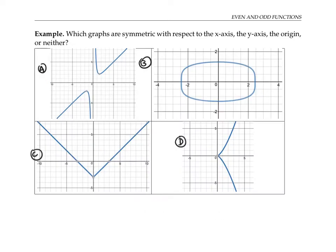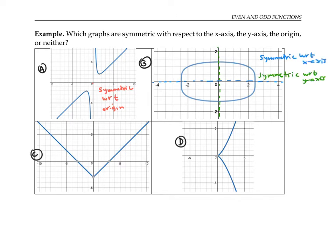Please pause the video and decide which of these graphs are symmetric with respect to the x-axis, the y-axis, and the origin. Some graphs may have more than one type of symmetry. Graph A is symmetric with respect to the origin — if you rotate it 180 degrees (turn it upside down), it looks exactly the same. It has no mirror symmetry, so it's not symmetric with respect to the x-axis or y-axis. Graph B has mirror symmetry across both axes, so it's symmetric with respect to the x-axis and the y-axis, and also looks the same upside down, so it's symmetric with respect to the origin. Graph C is symmetric with respect to the y-axis only. Graph D is symmetric with respect to the x-axis only.